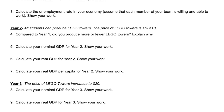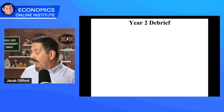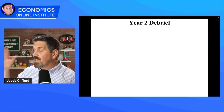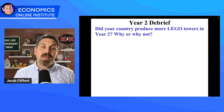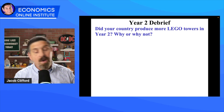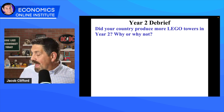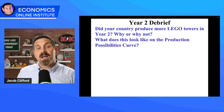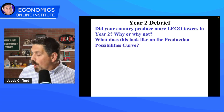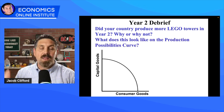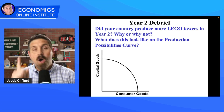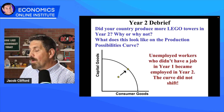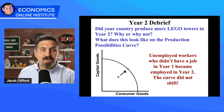At the end of Year 2, students answer questions four through seven, calculating their nominal and real GDP. Have a debrief session: did you produce more Lego towers in Year 2 and why? They probably produce more because workers who weren't working before are now being put to work. Make sure to ask: what does that look like on the production possibilities curve? Students might say the curve shifted — but no, that's not what happened. This is a point inside the curve moving to a point on the curve.